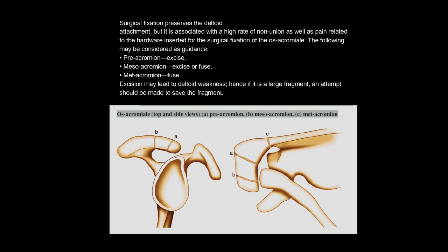Surgical fixation preserves the deltoid attachment but is associated with a high rate of non-union as well as pain related to the hardware. As guidance for surgical decision-making: pre-acromion — excise; mesoacromion — excise or fuse; metacromion — fuse. Excision may lead to deltoid weakness; therefore, if it is a large fragment, an attempt should be made to save the fragment.